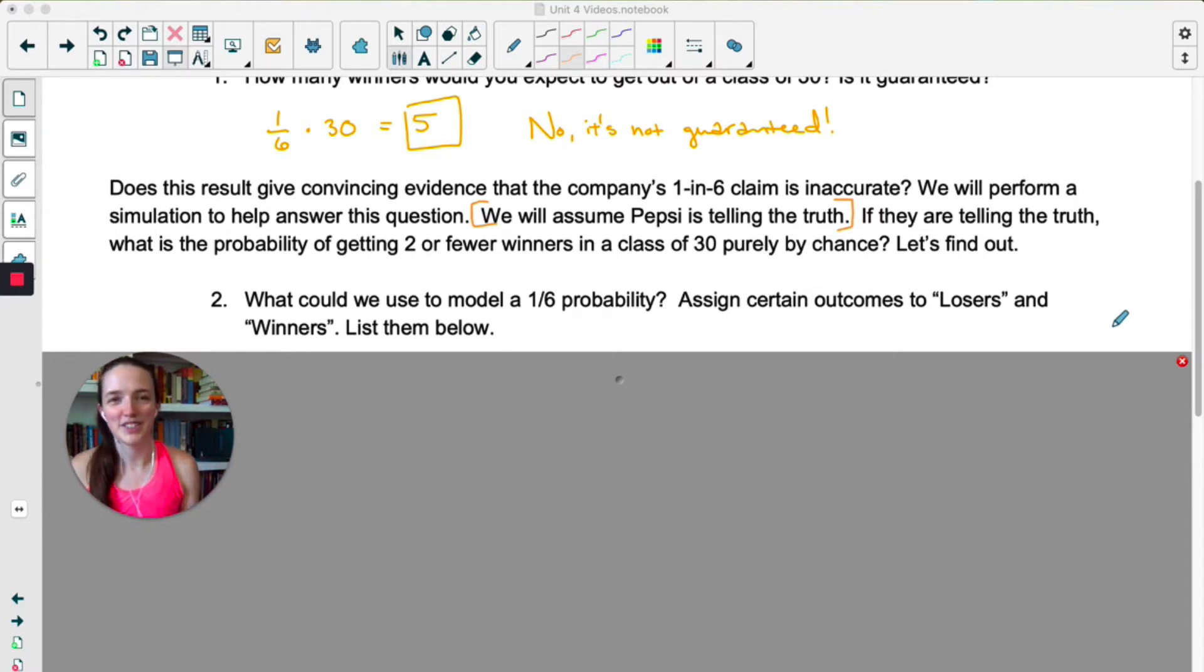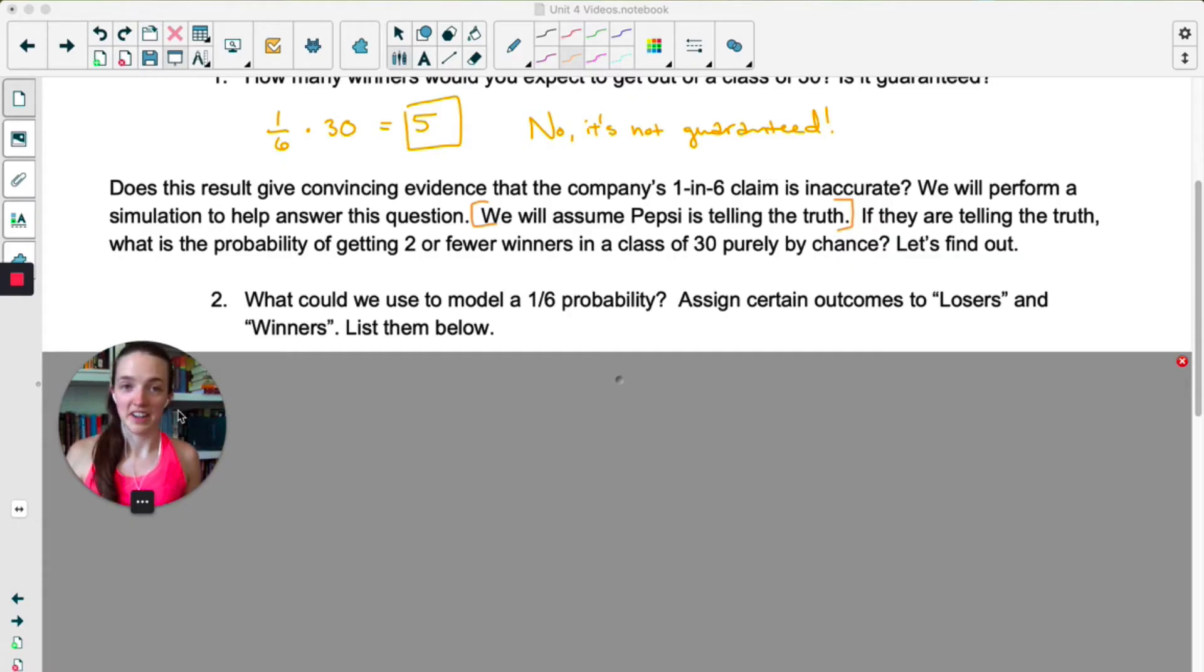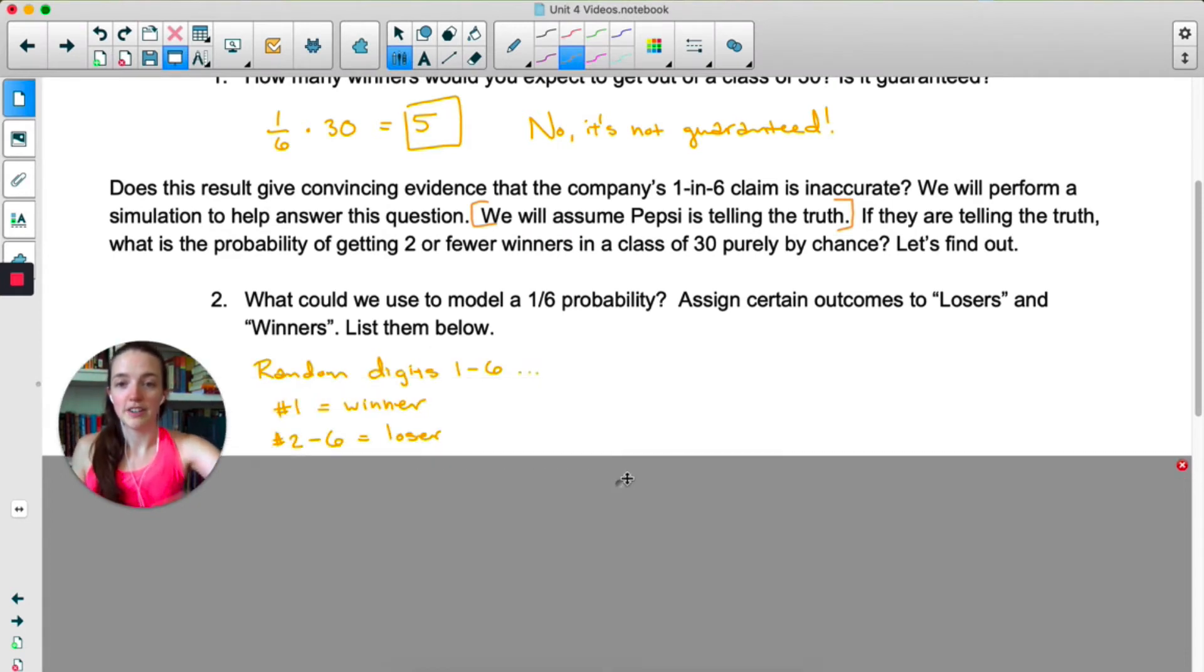So what could we use to model a one in six probability? If we were in person we could use dice, and that would be very convenient because on a die there are one, two, three, four, five, six options and so there's our one in six. But let's just say you're at home and you don't have a die or a pair of dice. We could use a random number generator like our calculator. So what we have to do is assign certain numbers to be losers and certain numbers to be winners. We could generate random digits from one to six and we could designate number one to be a winner and two through six would be losers.